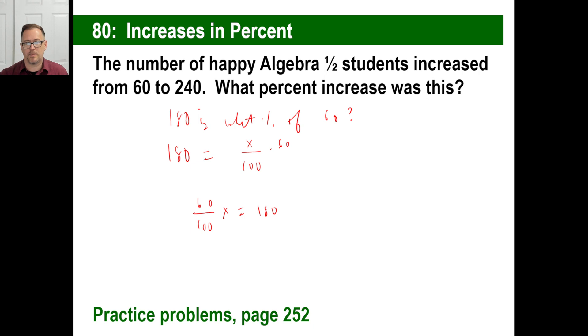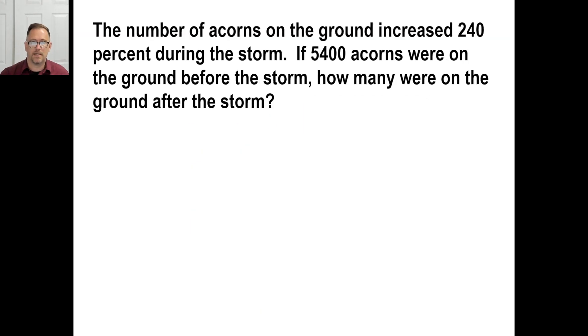Let's try the practice problems on page 252. Give those a whirl. Give A a whirl, and then pause it and come back. The number of acorns on the ground increased 240%. Stop right there. You tell me, what is the new percent we are dealing with in this problem? 340%, right?